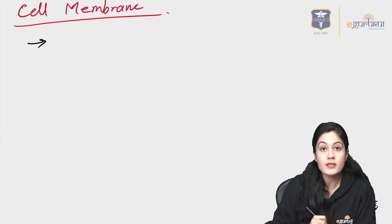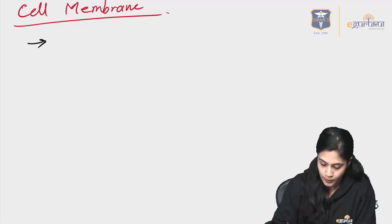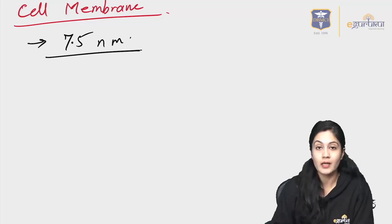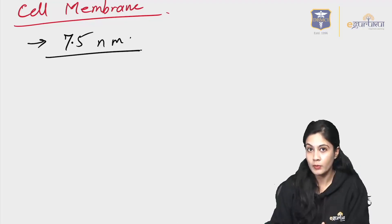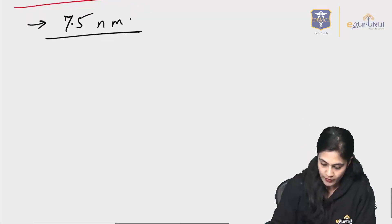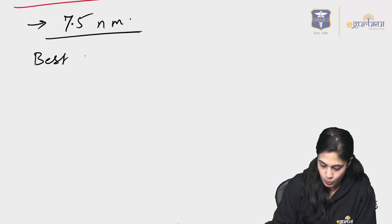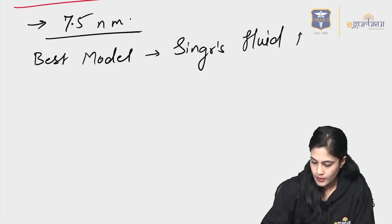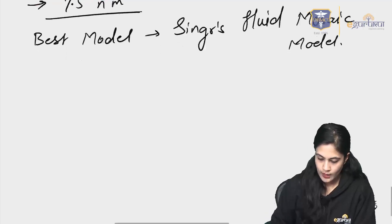What is the size of the cell membrane? In human beings, it is approximately 7.5 nanometers — remember, it is nanometers, not micrometers. It is 7.5 nanometers. The best model, which we already discussed, is Singer's fluid mosaic model.